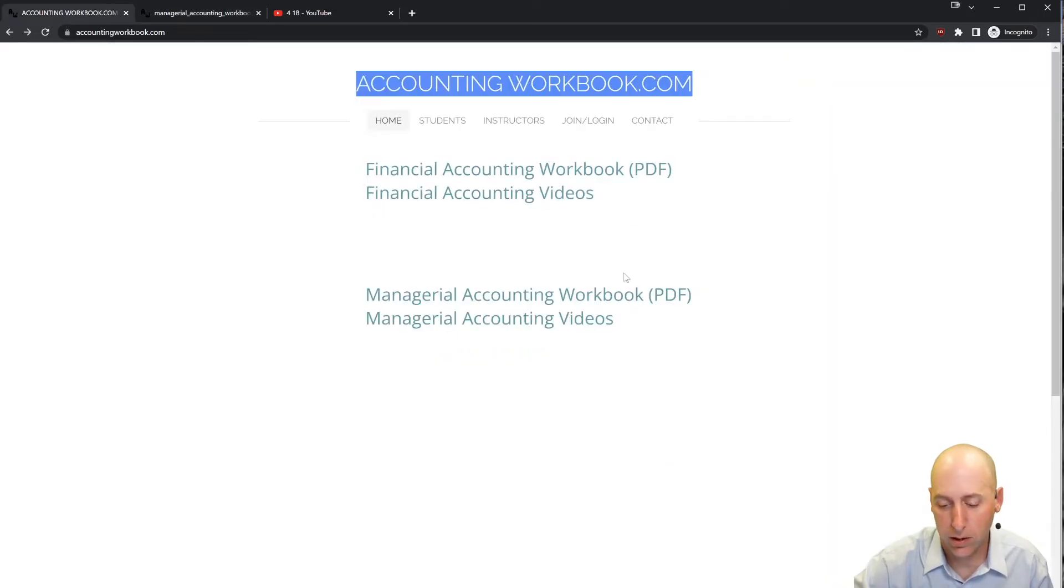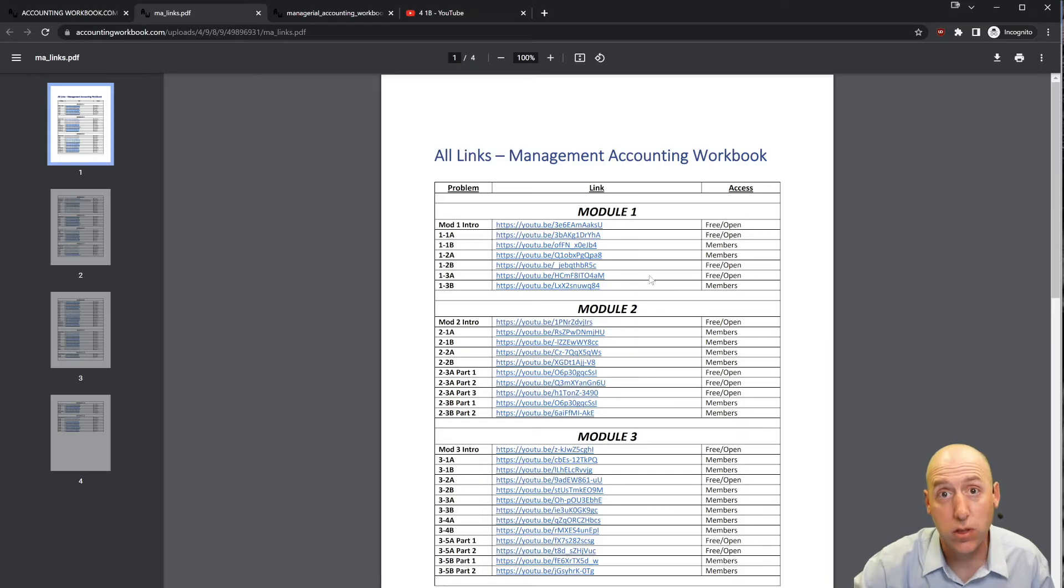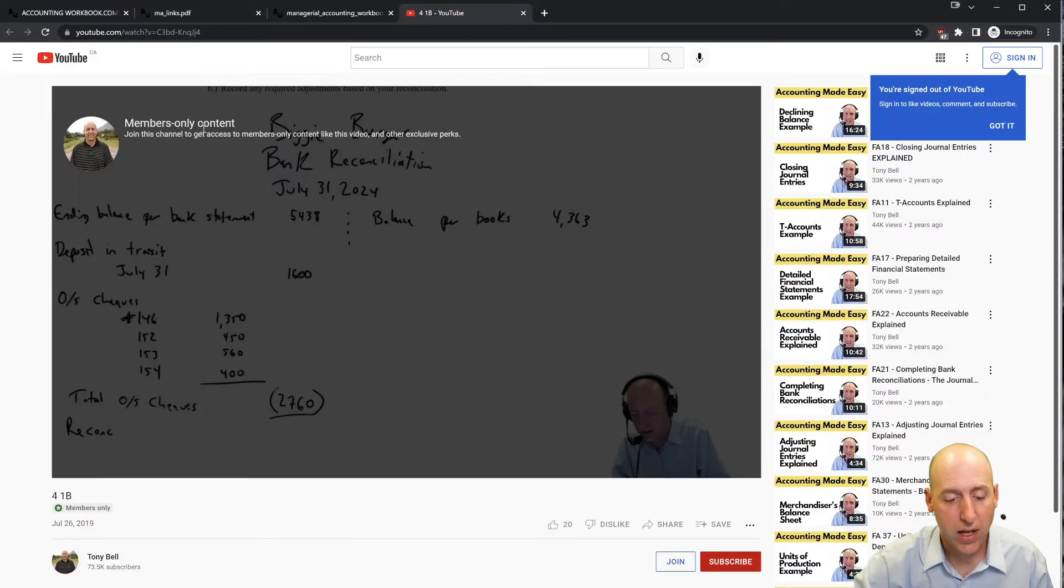Also found on the website are links to all of my accounting videos, not just the ones here on YouTube that are publicly listed, but also members-only videos. About 40% of my videos are free and open, the other 60% are for members. If you click one of the members links, it'll take you to a page that shows members-only content. If you'd like access to that content, just hit the join button.